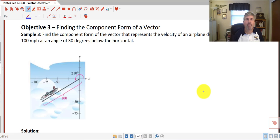In sample 3, finding a component vector. Find the component form of the vector that represents the velocity of an airplane descending at a speed of 100 miles per hour at an angle of 30 degrees below the horizontal. So they give us a diagram here. So if we're 30 degrees below the horizontal, we end up with a 210 degree angle. We've got our 100 for our magnitude here.